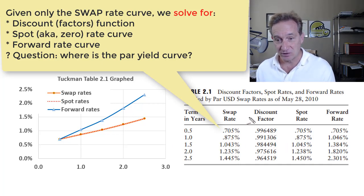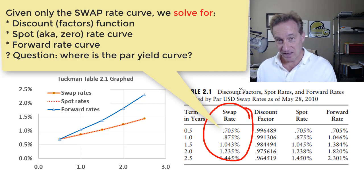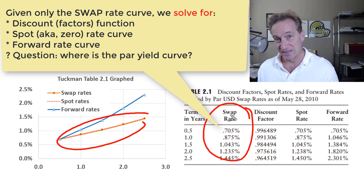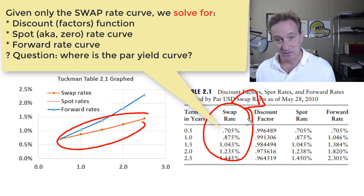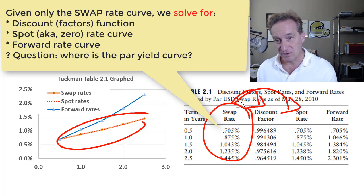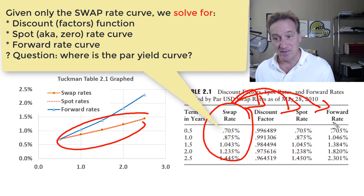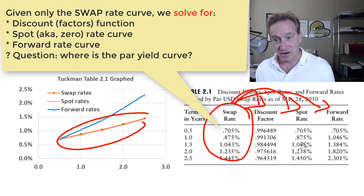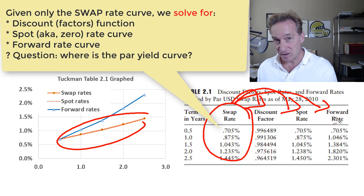We need to observe the swap rate curve — that'll be the only input assumption. Given that, I'll show you specifically how we extract the discount factors, that's the discount function; how we extract the spot rate curve, also called the zero rate curve; how we infer from that the forward rate curve; and finally, where is the par rate or par yield curve in all of this? So let's take a look.